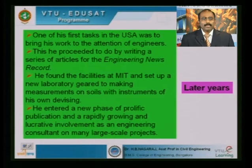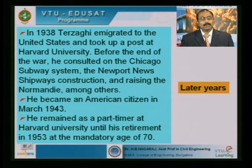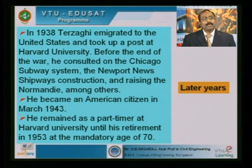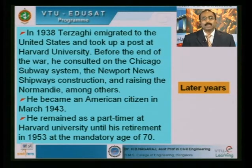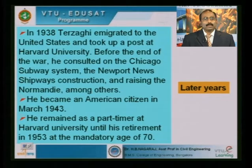He entered a new phase of publication after his research at MIT, writing many articles based on large-scale projects. In 1938, he permanently migrated to America from Austria and took up a post at Harvard University. Before the end of World War II, he consulted on the Chicago subway system — a challenging project involving soft clay — working alongside Ralph B. Peck. He also worked on the Newport News shipyard construction and others. He became an American citizen in 1943 and remained until his death in 1963.